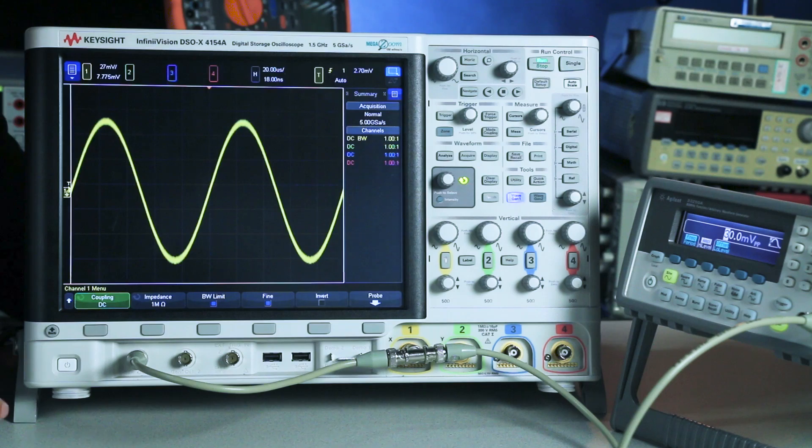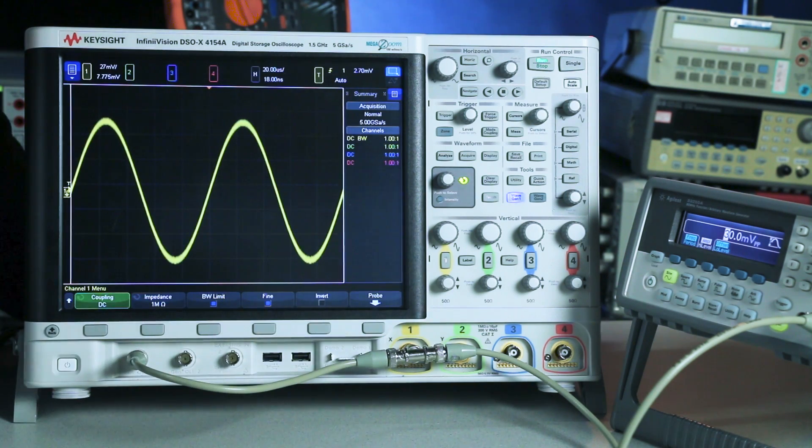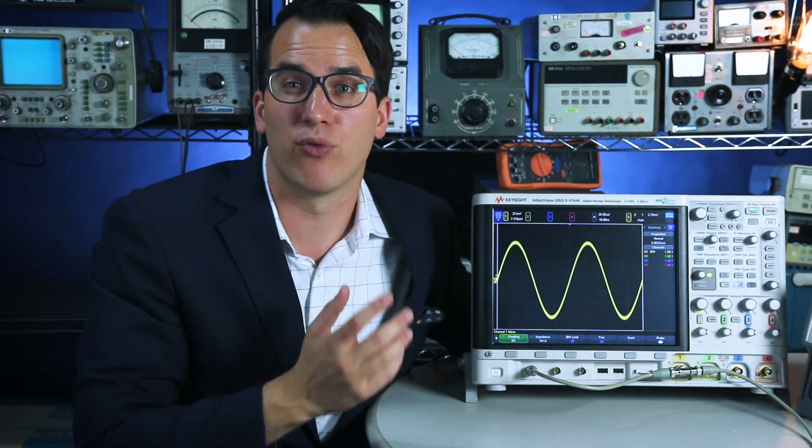So I'm still getting 80 megahertz of 30 millivolt peak to peak coming from my function generator acting as noise, but that's all getting filtered out by my 20 megahertz low pass filter on my oscilloscope.